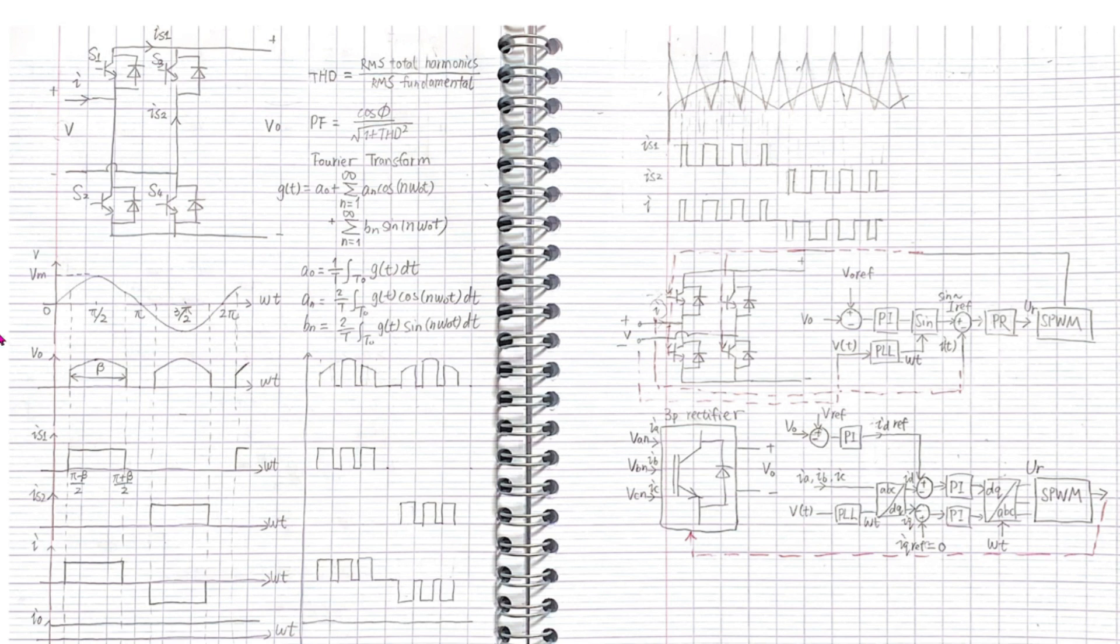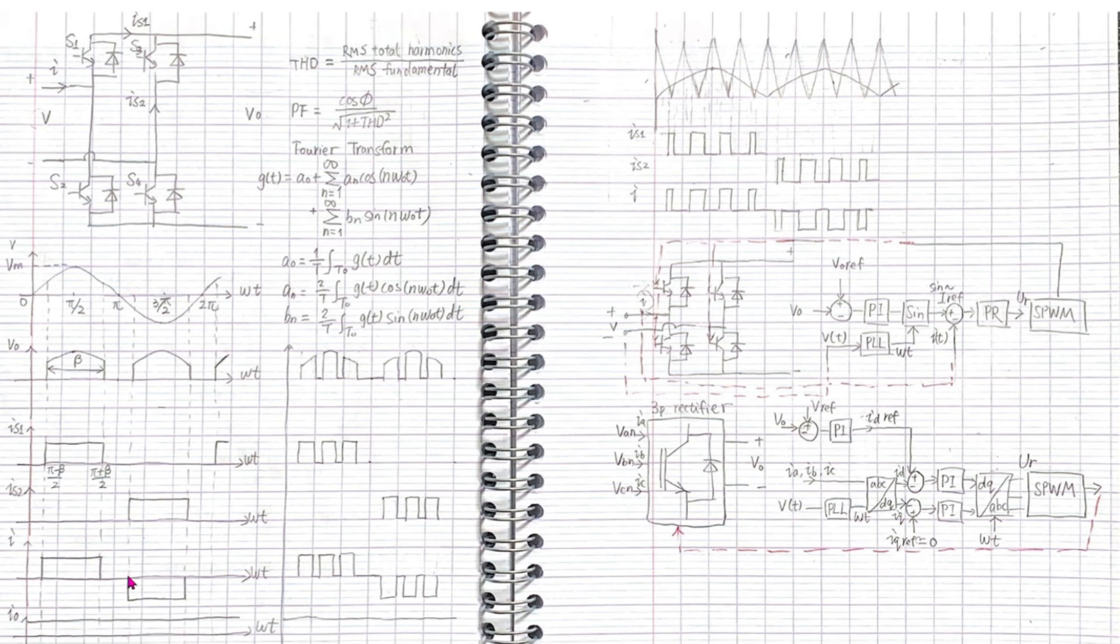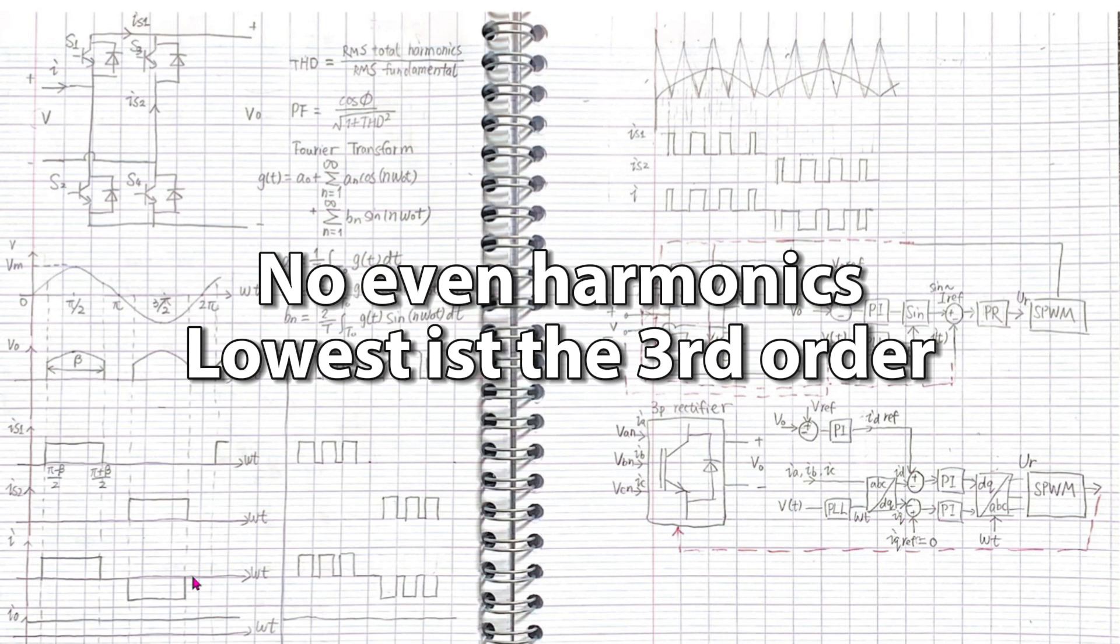Let's start with a simple case, symmetrical angle method. We close the S1, S4 at pi minus beta over 2 and open them at pi plus beta over 2. The S2 are operated oppositely. We get the input current in the waveform like this. It's symmetrical, so it doesn't have even order harmonics. So no second, fourth, sixth order, etc.